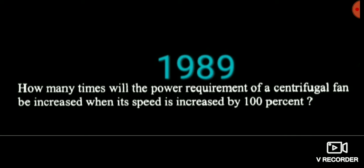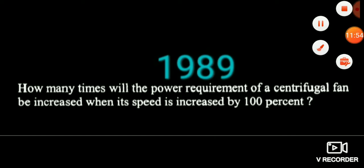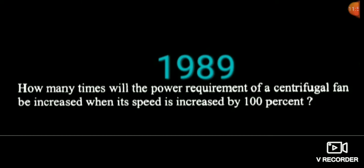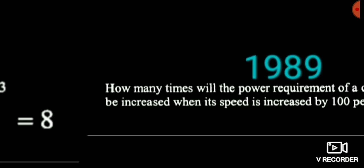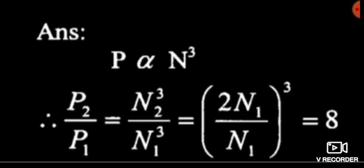The 1989 question: how many times does the power requirement of a centrifugal fan increase when its speed is increased by 100 percent? Power is directly proportional to N cubed. Speed increased by 100% means speed becomes 200 from 100 — that is 2 times. So 2 to the power 3 equals 8. The answer is 8 times.